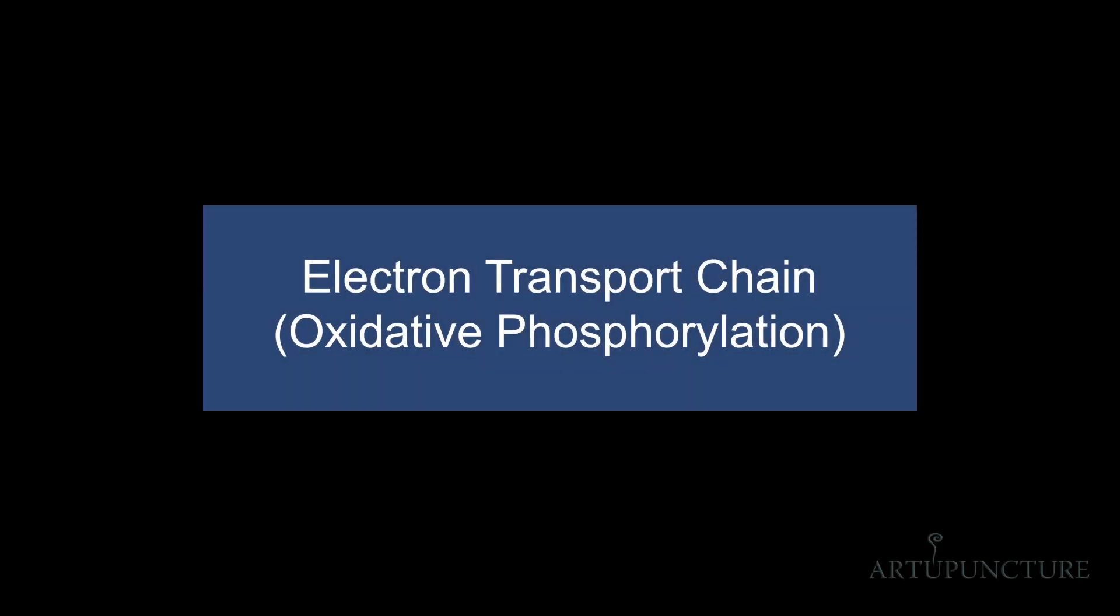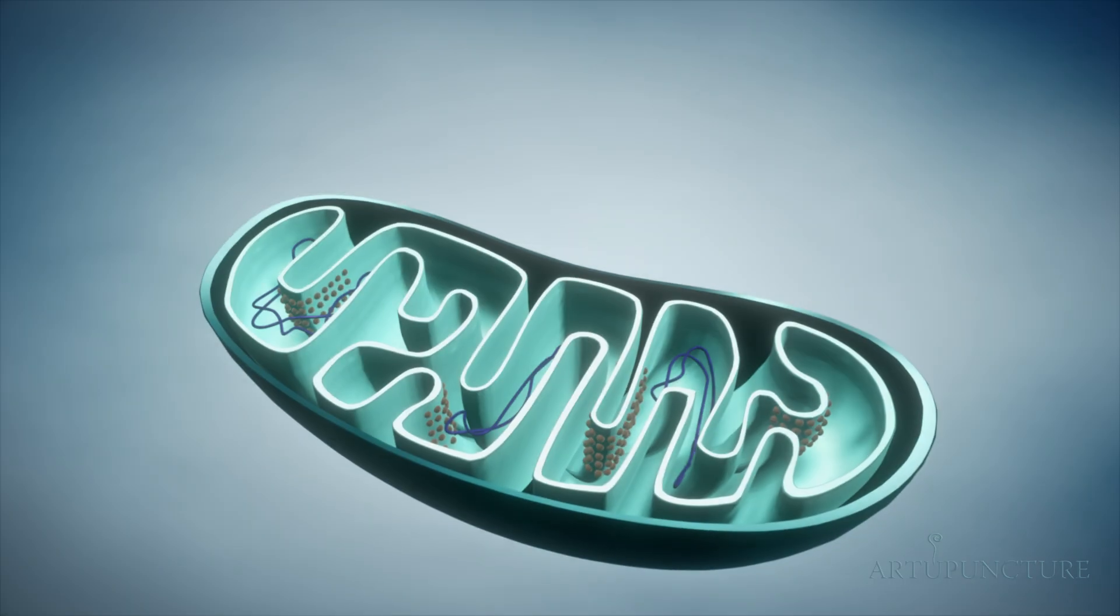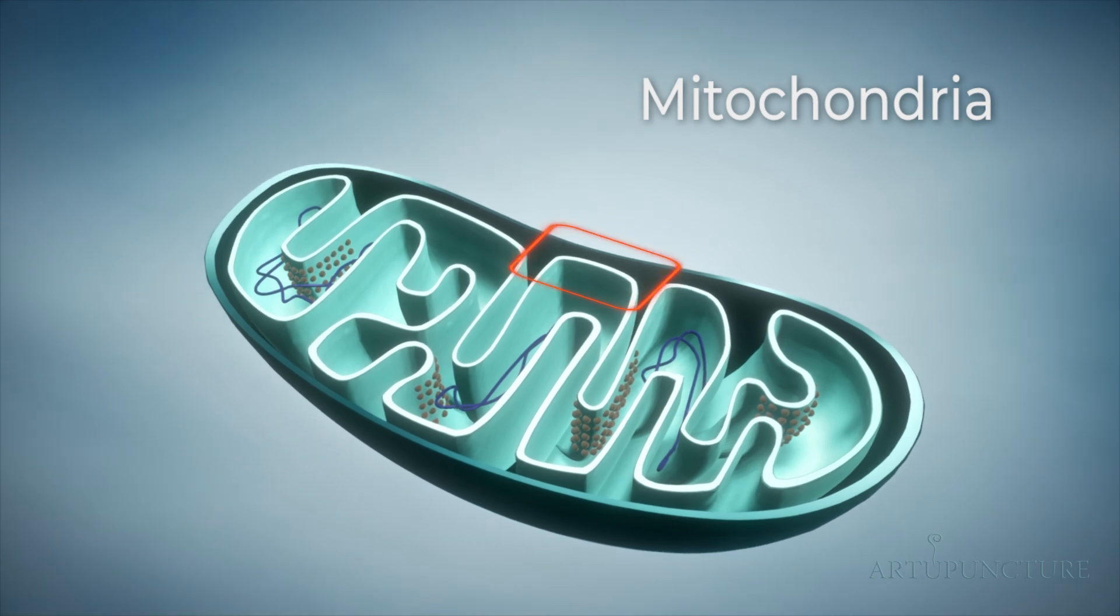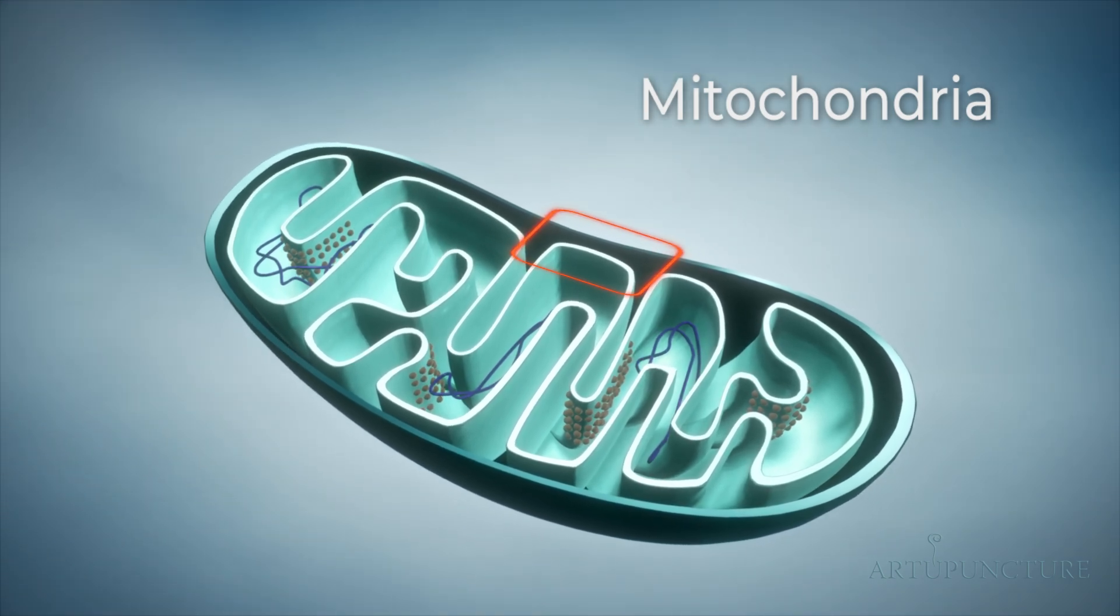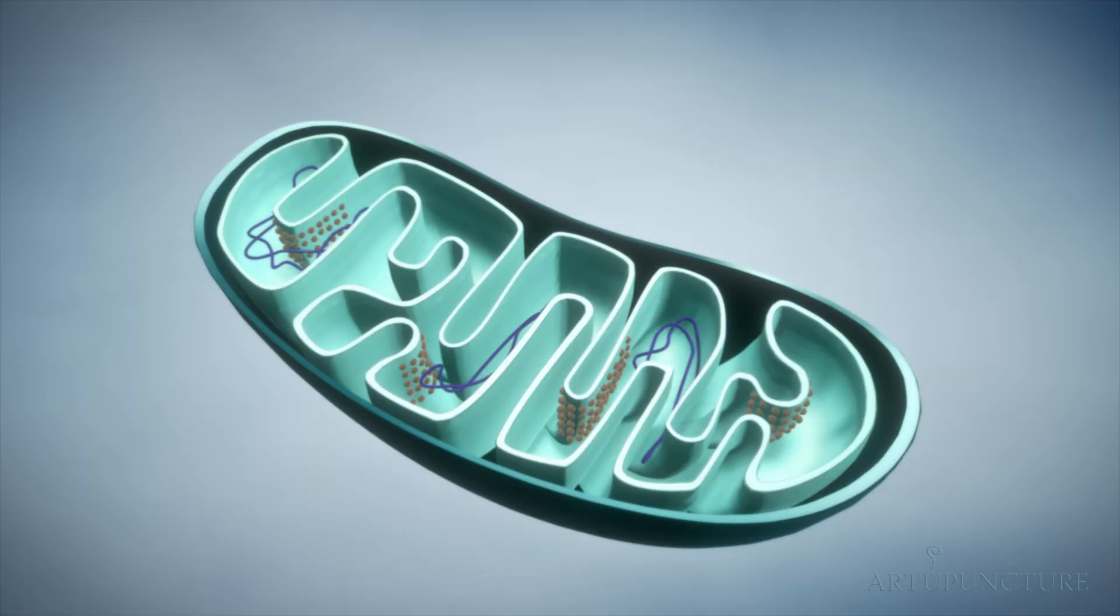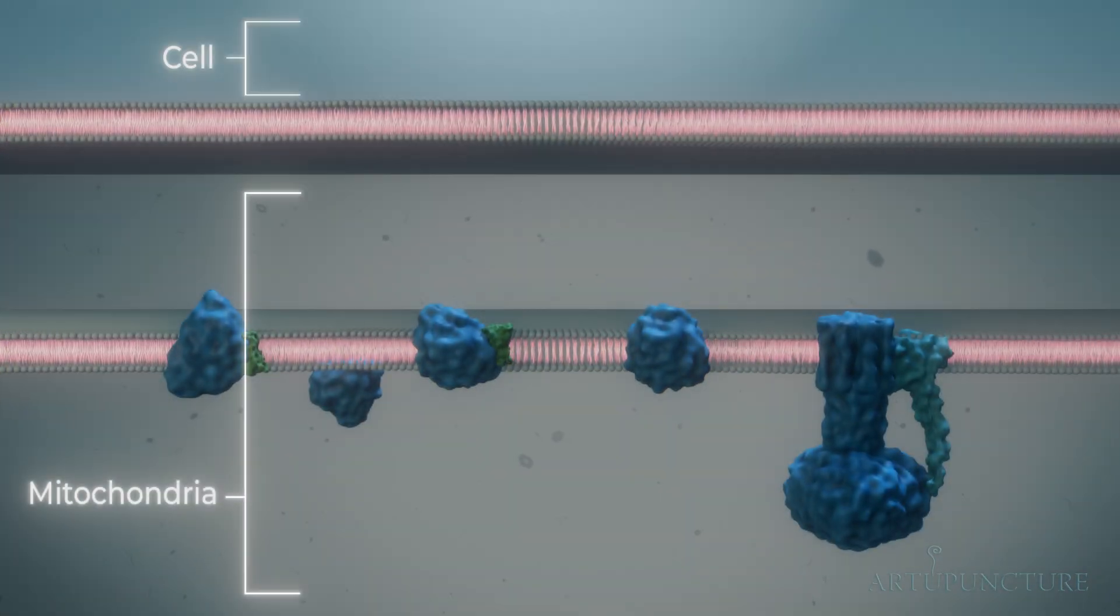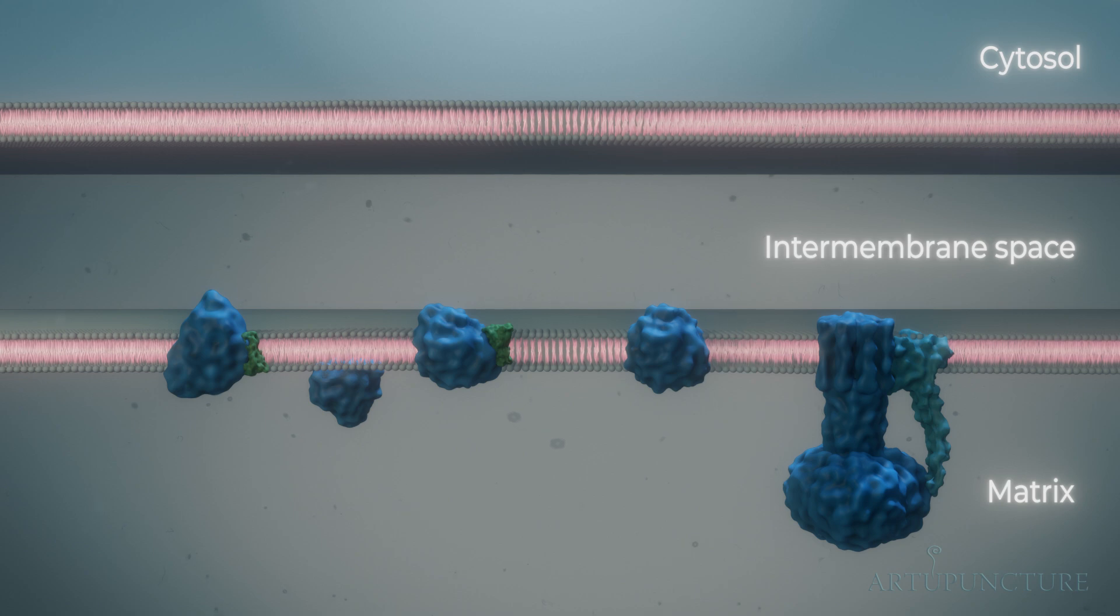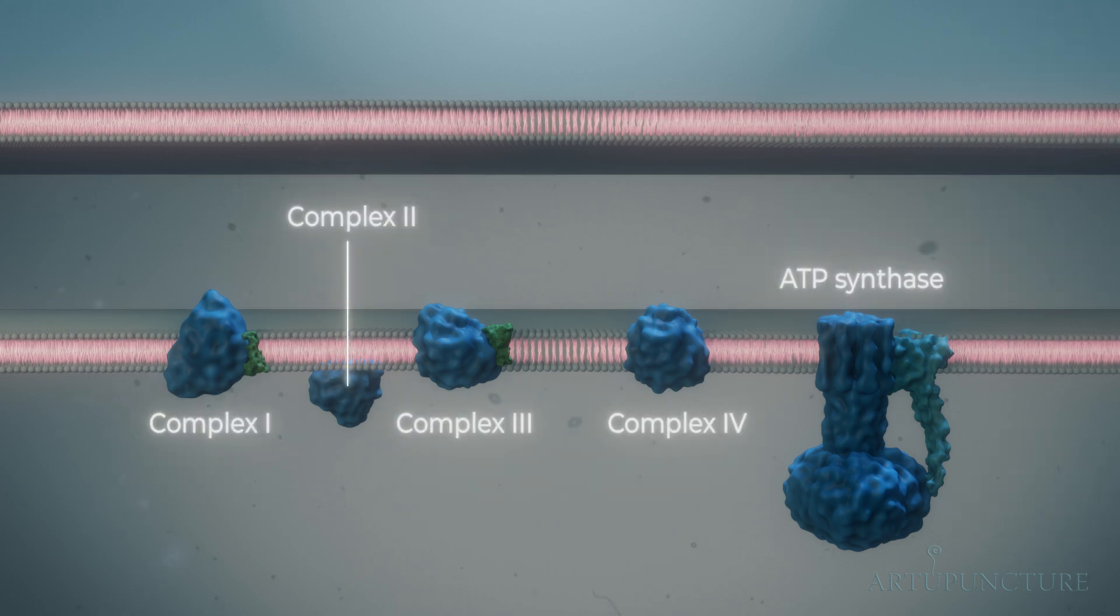The Electron Transport Chain. Among the processes in the inner mitochondrial membrane, one is the electron transport chain, where a series of protein complexes transfer electrons to drive ATP production, the cell's primary energy source.